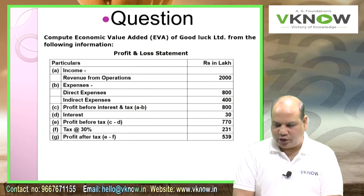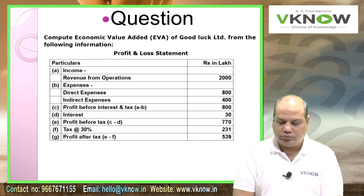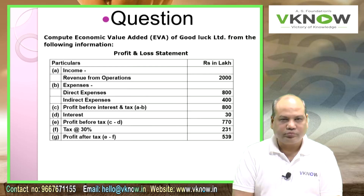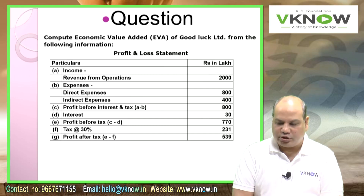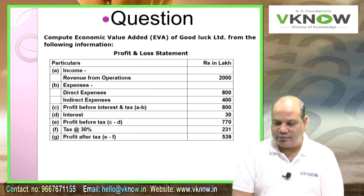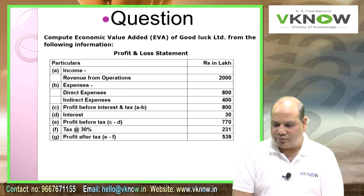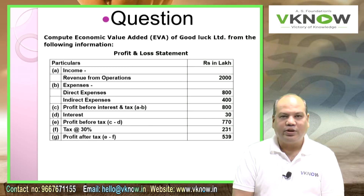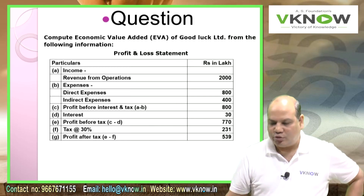You are given a profit and loss statement in rupees in lakhs. Under income, revenue from operations is 2000. Under expenses: direct expenses are 800 and indirect expenses are 400. Profit before interest and tax (PBIT) equals A minus B, which is 800.